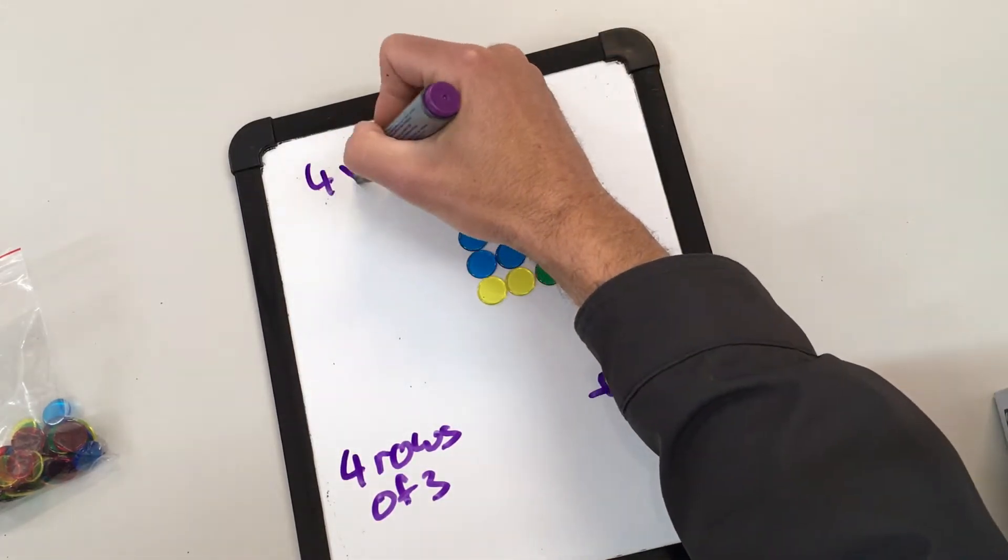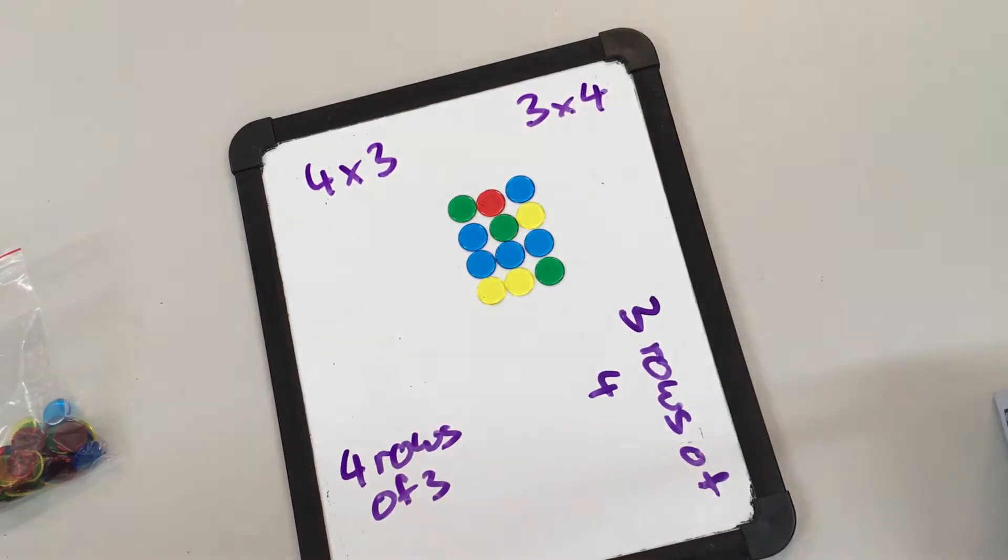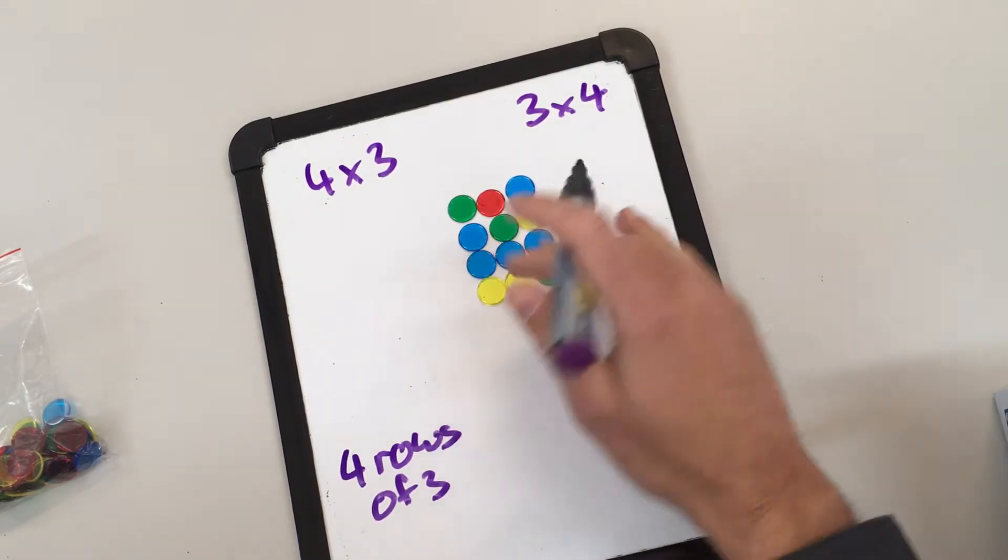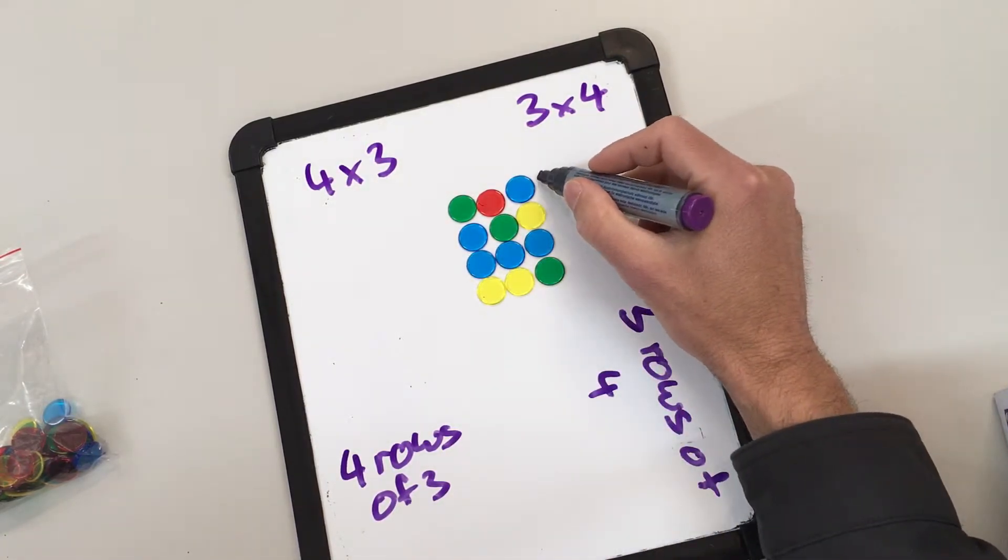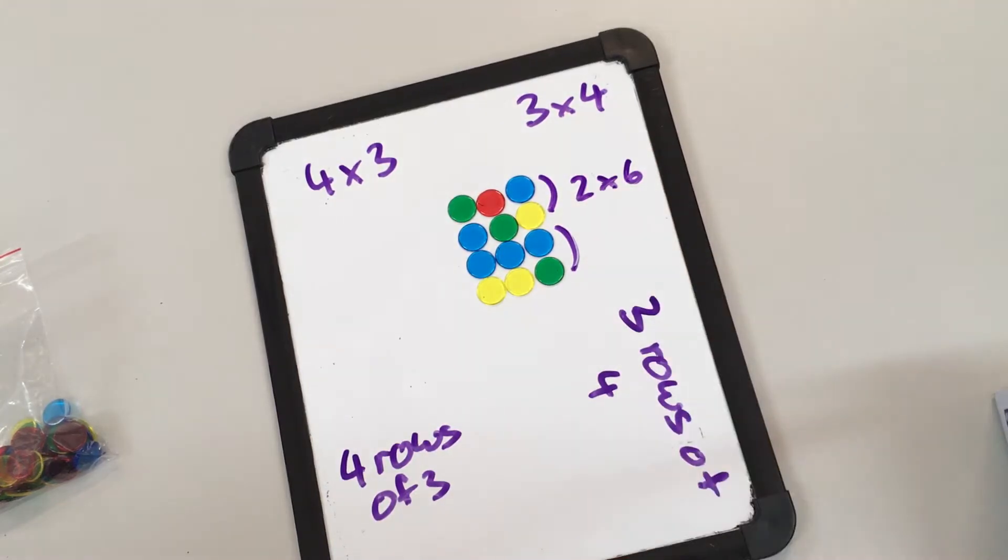Another great way to use an array is to partition that up, and we could say, all right, well I've also got two rows of six. So obviously our answer here is 12.